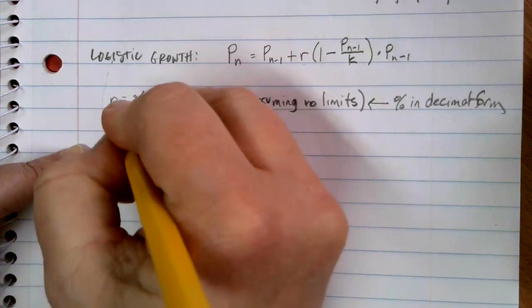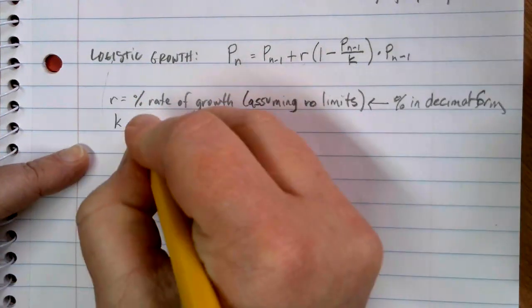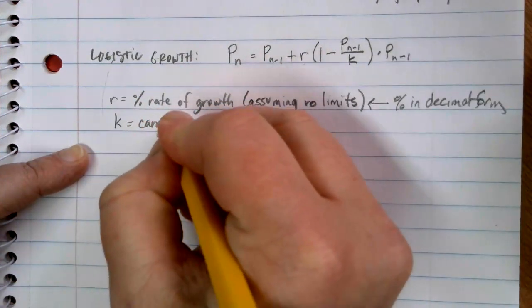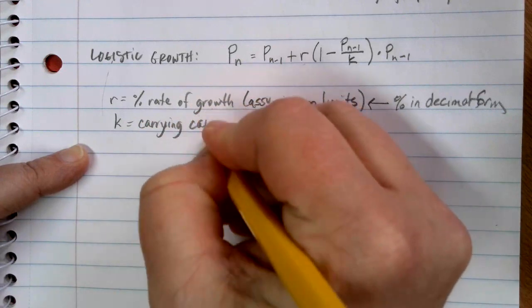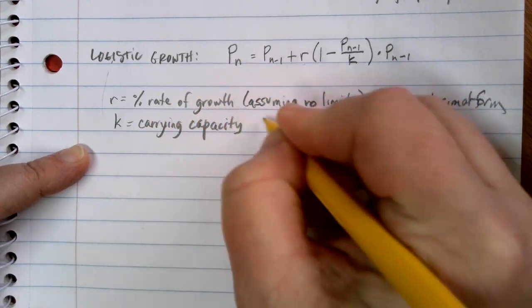The K down here is that carrying capacity number. It's that upper limit value.